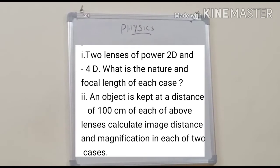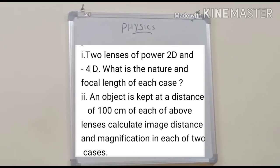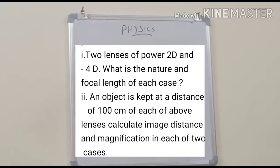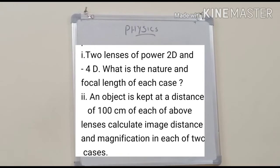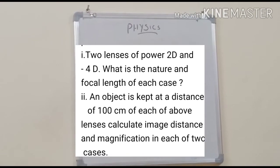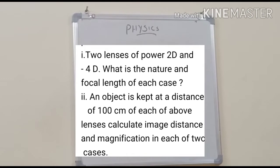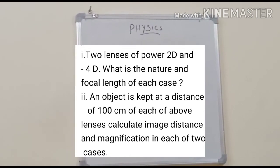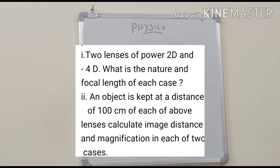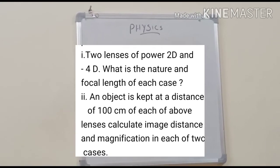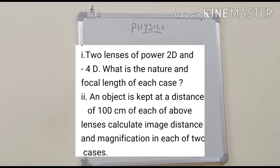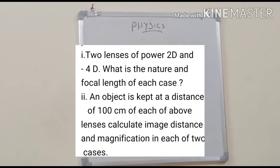There are two questions. In the first question, we have the power of two lenses: the first lens has power 2D and the second lens has power minus 4D. We want to find the nature and focal length of each lens. For the second question, an object is kept at a distance of 100 cm — that is, U equals 100 cm — from each lens. From the power in the first question, we can calculate the focal length, and then use U to calculate image distance.